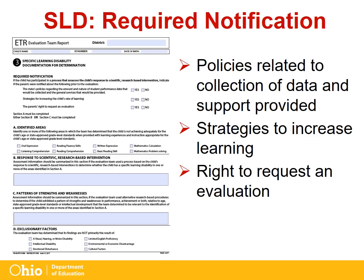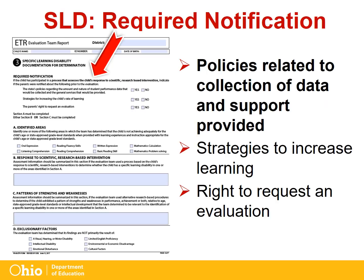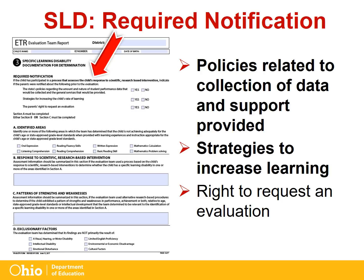When the multi-tiered systems of support team is proposing to provide interventions prior to making a referral for an initial evaluation, written notification is required to be sent to the parent. If the child is to participate in a process that assesses the child's response to scientific research-based interventions, parents must be notified of state policies regarding the amount and nature of student performance data that would be collected, the general education services provided, strategies to increase the rate of learning, and the parent's right to request an evaluation.